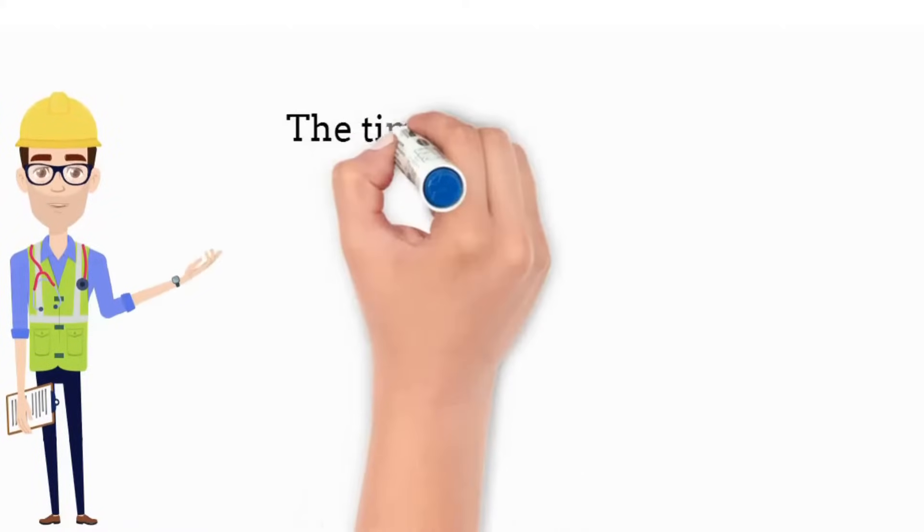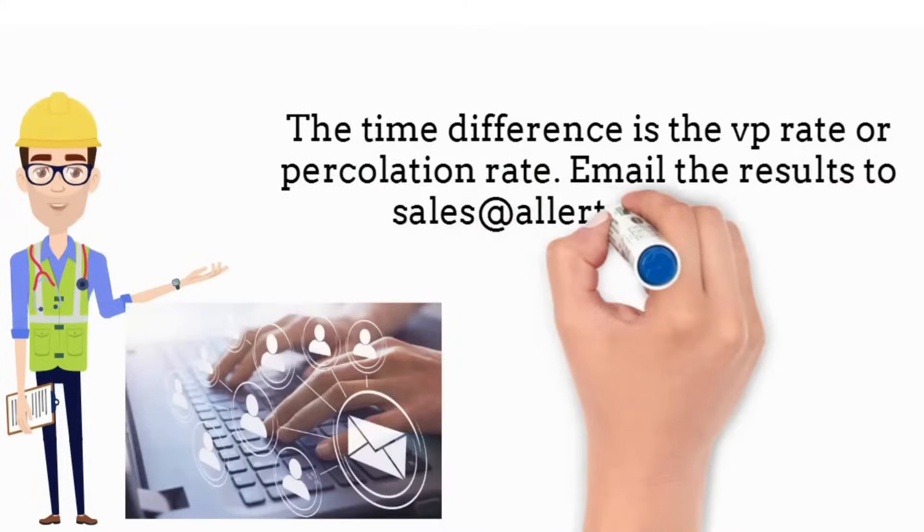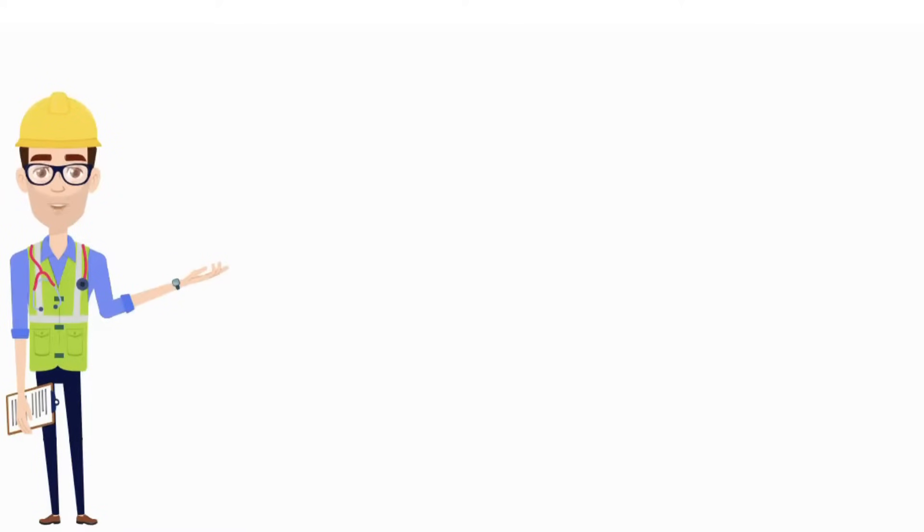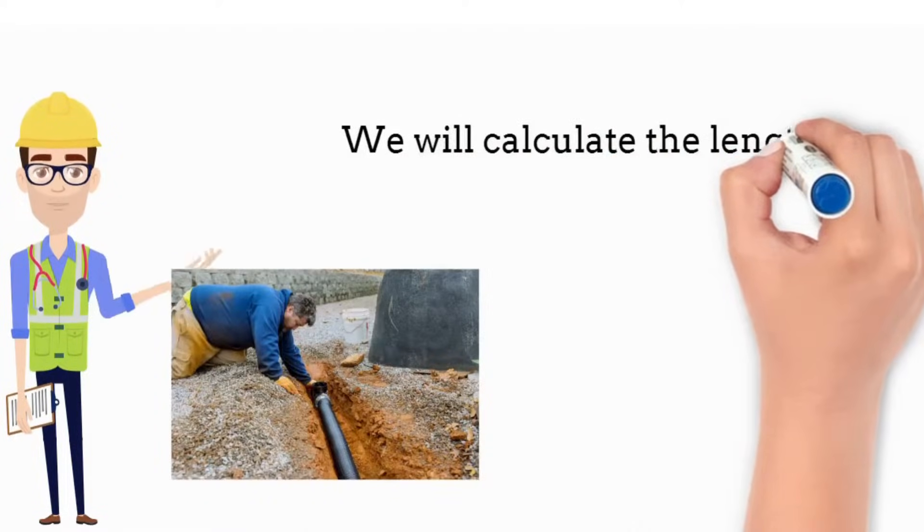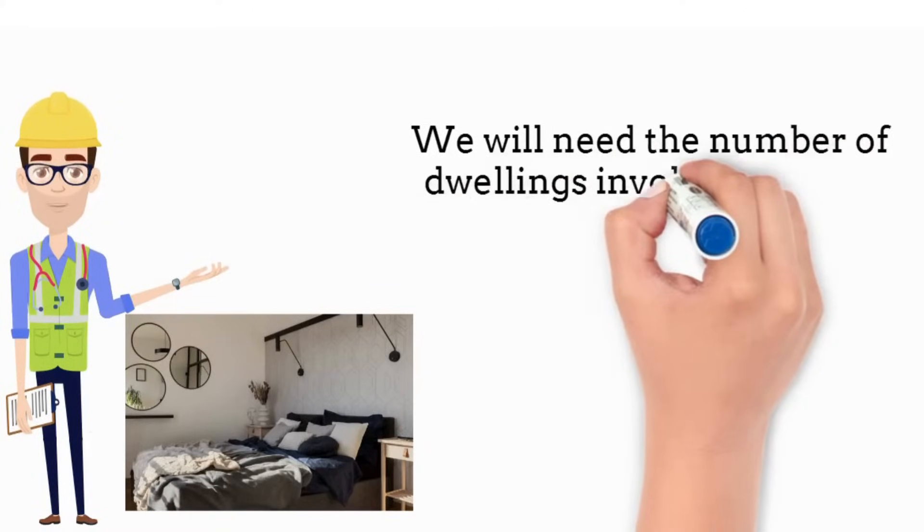Results. The time difference is the VP rate or percolation rate. Email the results to sales at allertonuk.com. We will calculate the length of drains needed. We will need the number of dwellings involved and the number of bedrooms.